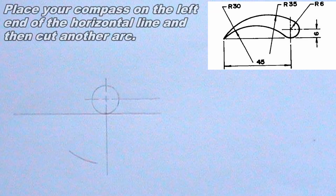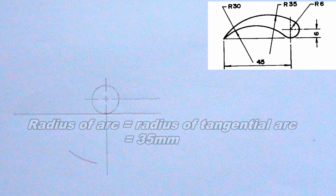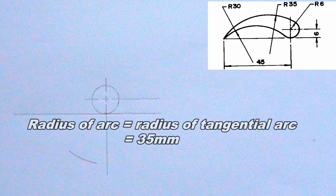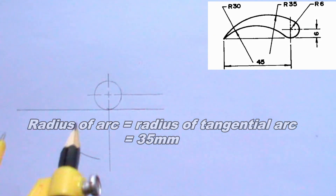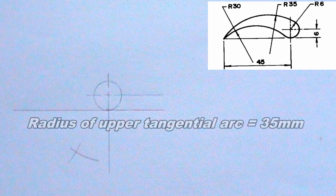I will also place my compass on the left end of the horizontal line and then cut another arc. The radius of this arc should be equal to the radius of the tangential arc, which is 35mm. This arc should intersect the first arc. I will place my compass on the point of intersection of the two arcs, then I will produce the upper tangential arc.